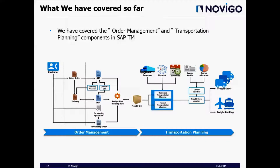So far in our previous lectures we've covered order management and transportation planning components of SAP Transportation Management. We saw how we can receive orders from customers, how we can create OTRs and DTRs and forwarding orders, how freight units will be created and how freight units can be planned into freight orders and freight bookings using resources, networks and schedules.